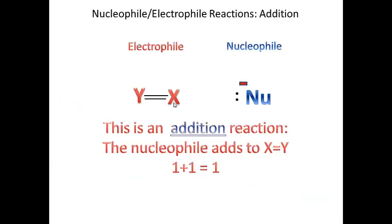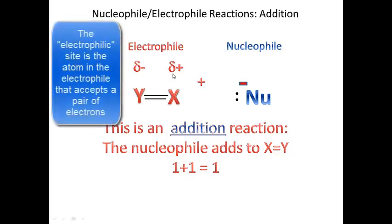Nucleophiles and electrophiles also undergo what we call addition reactions. The key is to remember: one plus one equals one. In addition, you take one molecule and add it to another molecule, and they become one in the product. Here's my electrophile again, with partial charges — Y is partially negative, X is partially positive — so the nucleophile is going to attack X, which is the electrophilic site.